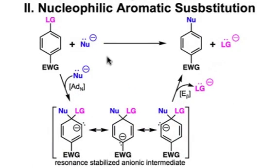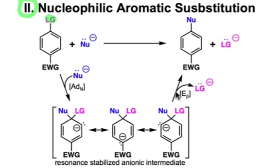Now let's look at the pathway for the second substitution reaction, known as nucleophilic aromatic substitution. It's going to be the displacement of a leaving group on a benzene ring that bears an electron-withdrawing group (EWG). That leaving group is going to be substituted with an incoming nucleophile. It follows an addition-elimination reaction pathway that involves a resonance-stabilized anionic intermediate.